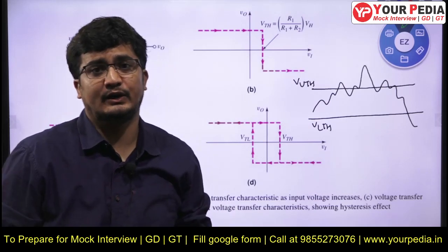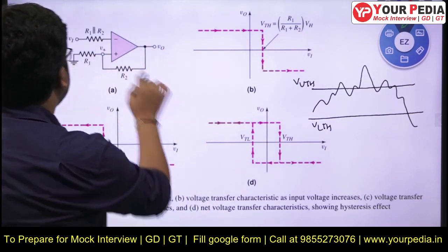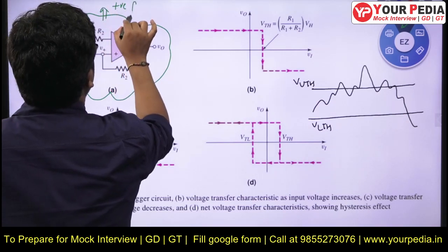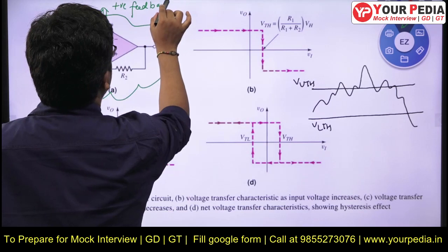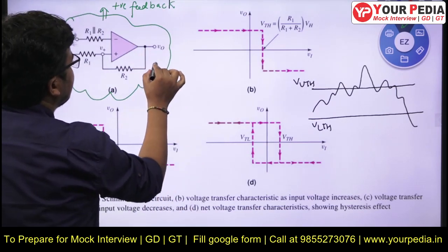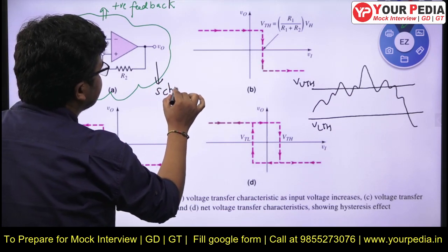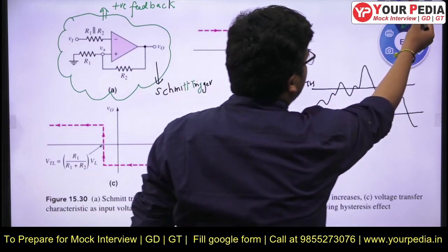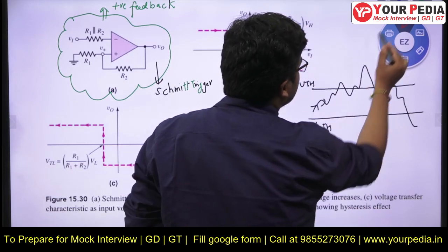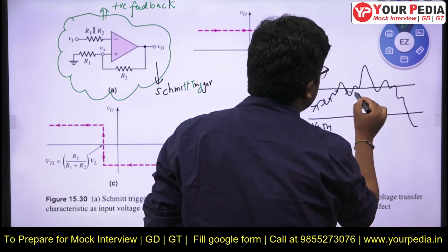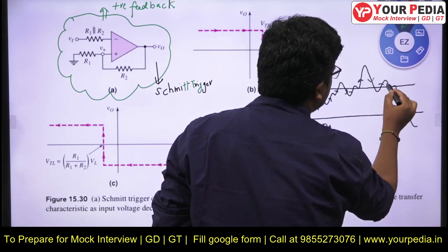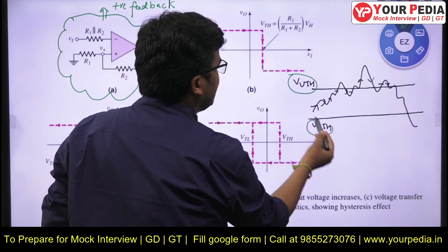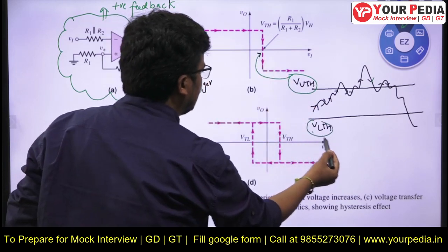Let us see how the Schmitt trigger handles the noise effect, removes it, and works efficiently. This is basically an operational amplifier configuration in closed loop with positive feedback — this configuration is popularly known as the Schmitt trigger. If we check this input: the input is increasing then decreasing, again increasing then decreasing. This is a noisy input. This is my upper threshold and this is my lower threshold — upper threshold at this point and lower threshold at this point — and these values are dependent on what reference circuit you have used.